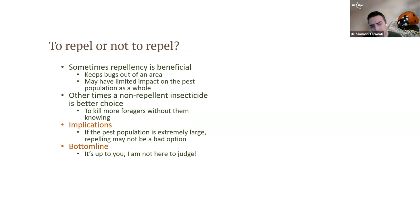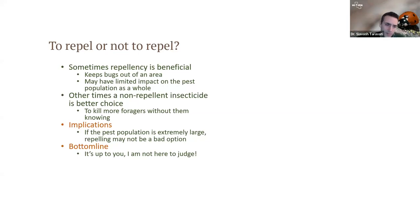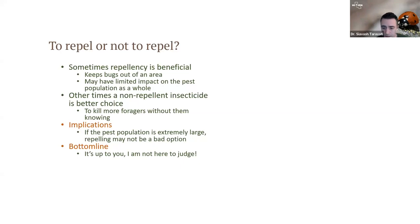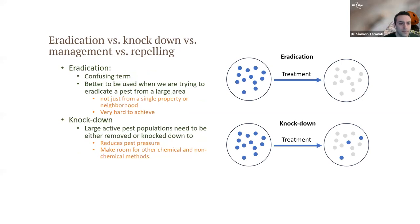To repel or not to repel — sometimes people say non-repellent is always better, but that's not always true. Repellency is beneficial when you want to keep bugs out of an area and don't care what happens outside it. The same applies to ants. But if you want to maximize kill, a non-repellent insecticide is better. However, if you use too high a concentration of non-repellent insecticides, they can show repellency too. A study showed that high concentrations of fipronil can cause repellency in termites, and this applies to other groups as well.